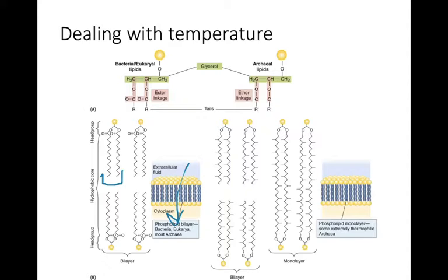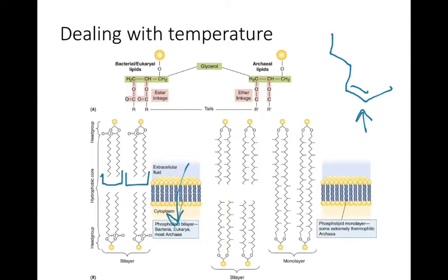As temperatures cool, that slows down movement, which means there needs to be more space between the phospholipids in order to maintain fluidity. One way to create space is to increase the concentration of cis unsaturated fatty acid tails. These cis fatty acid tails create kinks, and that creates spacing between the phospholipids.